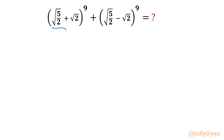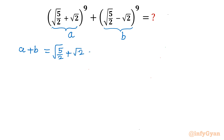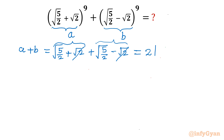Let us use substitution. We presume the first bracket is 'a', and the second bracket is 'b'. For equation 1, we find a + b: writing out √(5/2) + √2 for a, and √(5/2) − √2 for b, when added the ±√2 terms cancel, giving 2 × √(5/2). Multiplying numerator and denominator by 2 inside the square root, the 2s cancel, so a + b = √10.